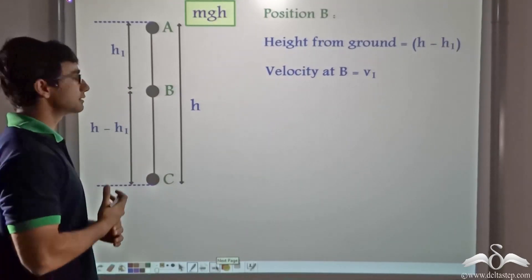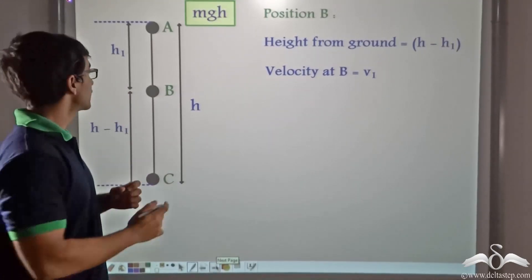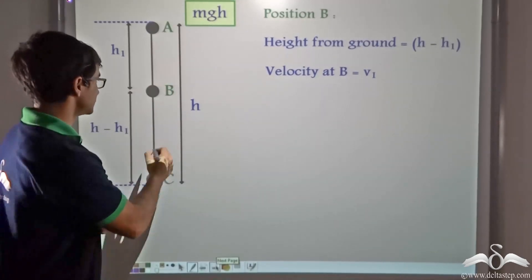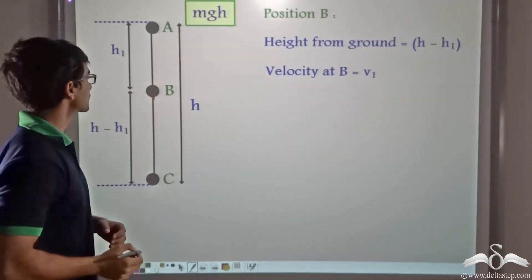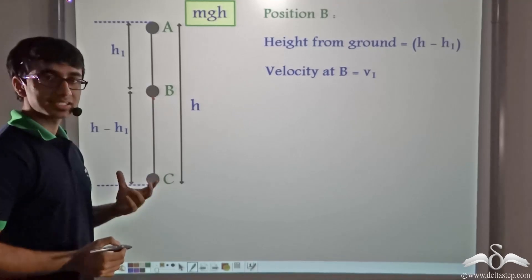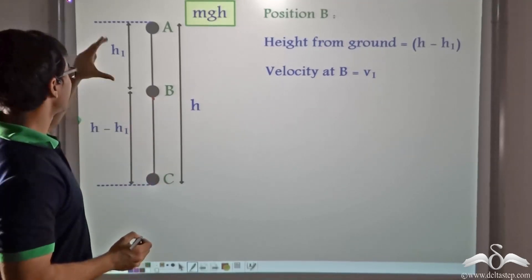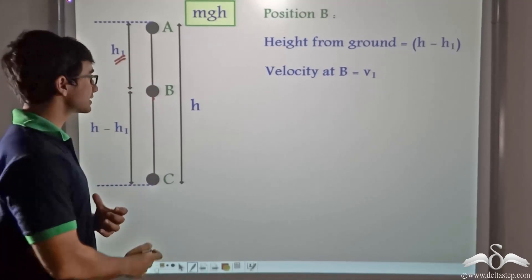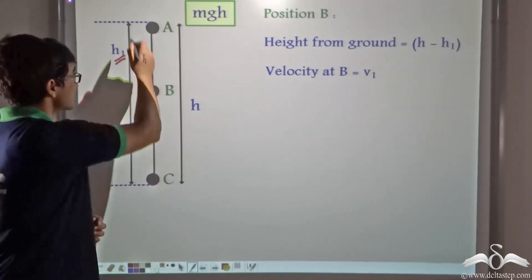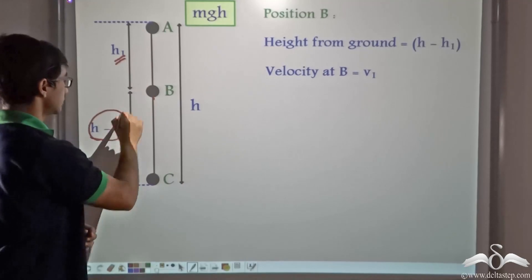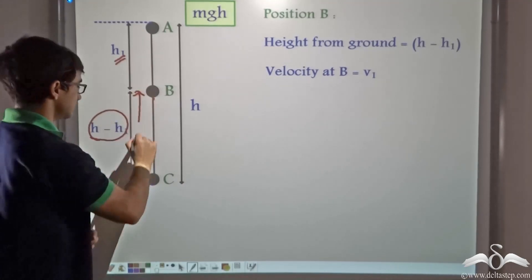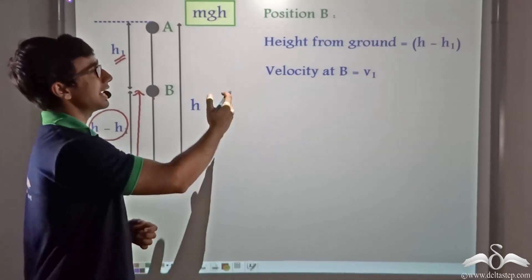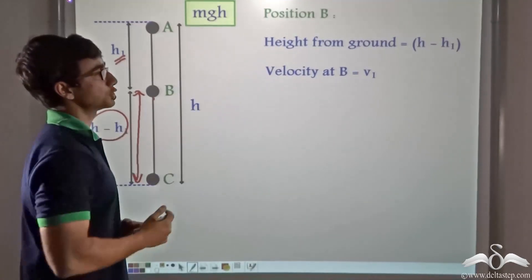At position B, the ball has fallen a certain height from the top and is still at a height from the bottom. So let us say the ball has been displaced by H1. So the height of the ball from the ground is H minus H1 — that is this particular height, H minus H1. That is the height from ground is H minus H1.